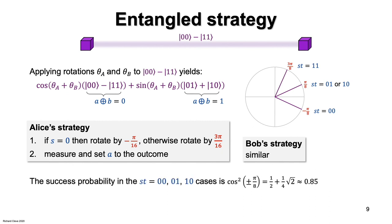The success probability in the 0, 0, 0, 1 and 1, 0 cases is the cos squared of plus or minus pi over 8, which is around 85 percent.